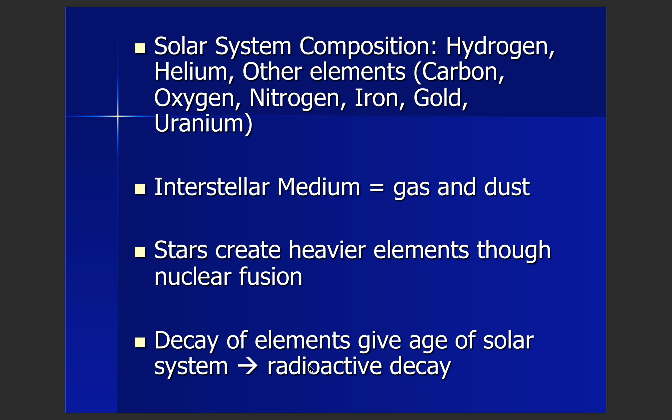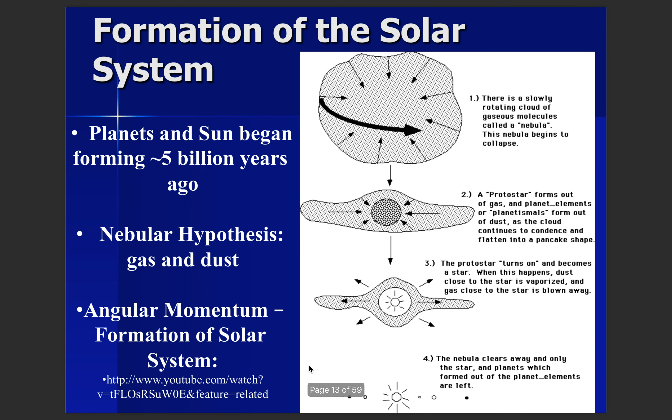All of those elements came from the interstellar medium — the diffuse amount of gas and dust that fills the spaces between the stars. When those areas of gas and dust become lumpy, they form nebular cloud regions. Stars create heavier elements through nuclear fusion, which then populates the interstellar medium with heavier elements. From the decay of elements, we're able to estimate the age of our solar system using radioactive decay, predicting that our sun began forming about 5 billion years ago.